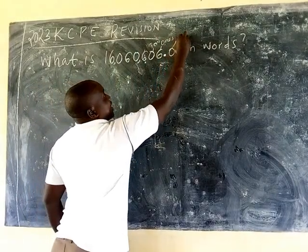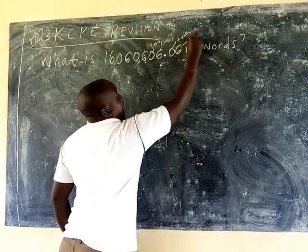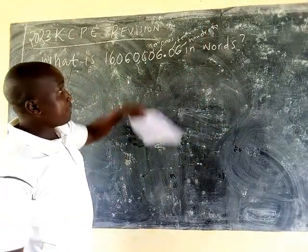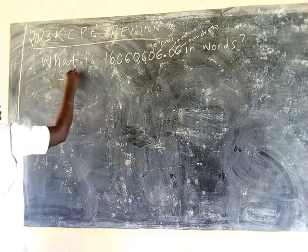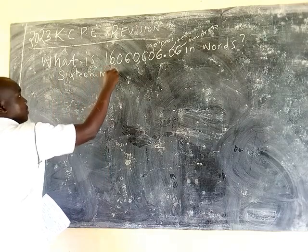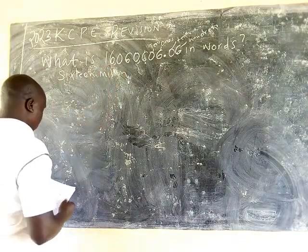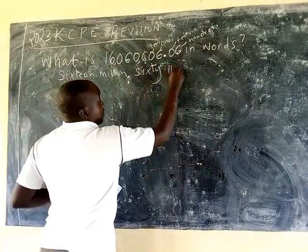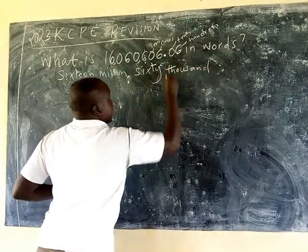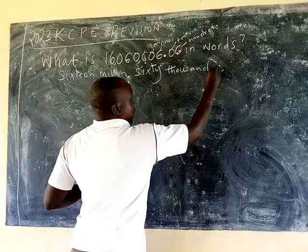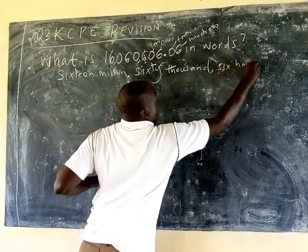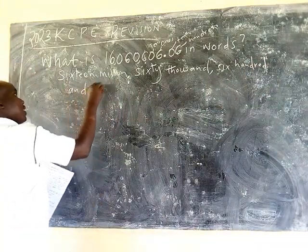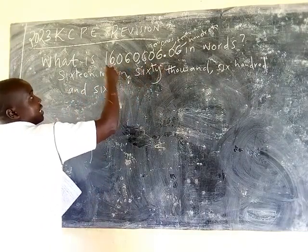After the decimal place we have ones, then tens, then hundreds. So now this number in words is: 16 million, 60,000, 600 and six. From here to here we finish the whole number.